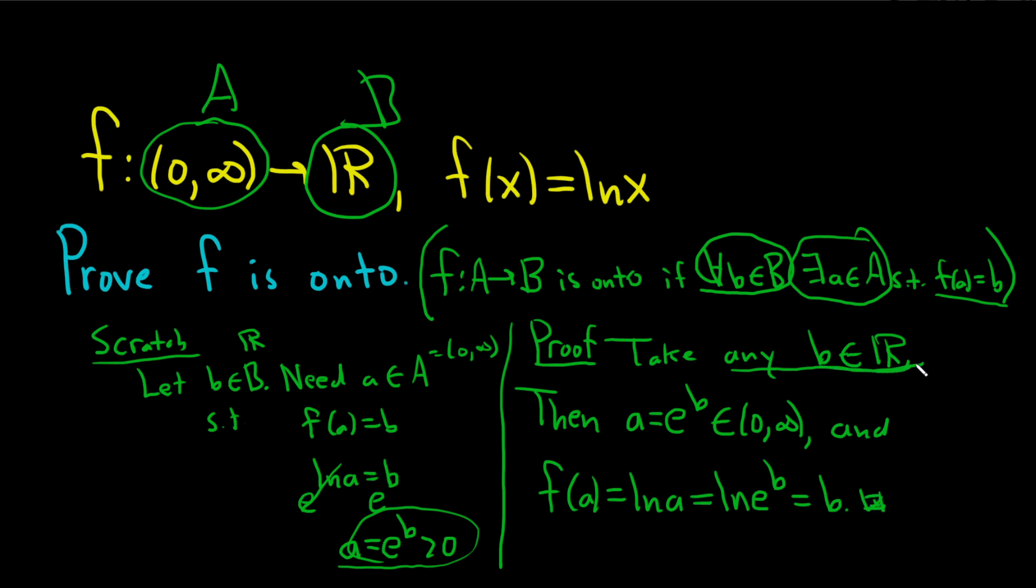We took an element here, we showed the existence of an element here such that f(A) is equal to b, and so that shows the function is onto. I hope this video has been helpful. Good luck.